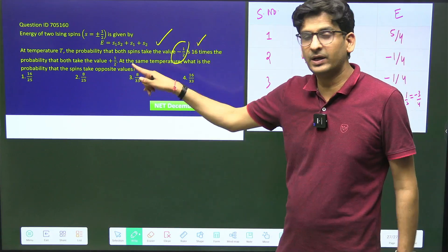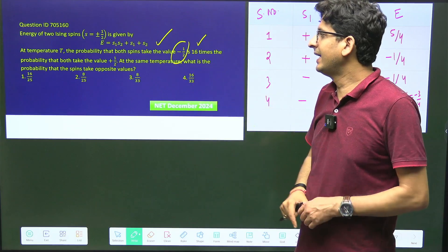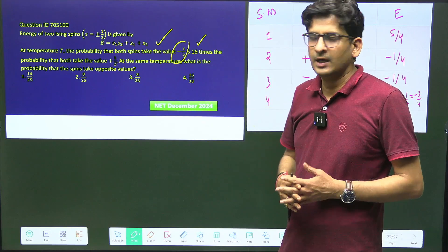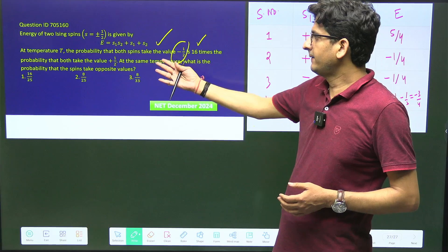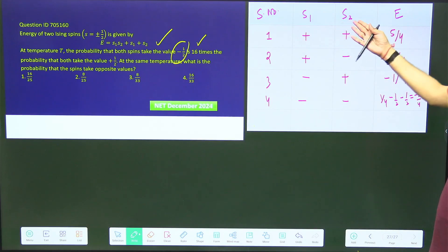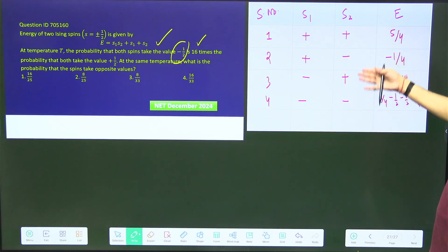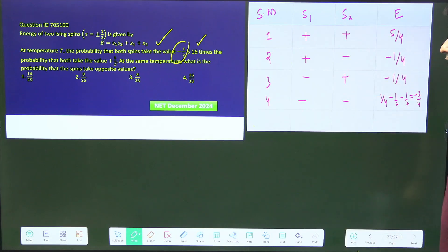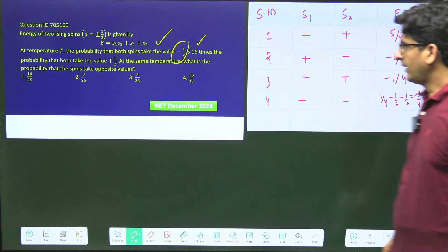The probability that both spins take minus half value is 16 times the probability that both spins take plus half value. So obviously energy in the case of minus half spin is lower, so their probability is higher. We have to tell at that particular temperature what is the probability that spins have opposite values - that means up down or down up.